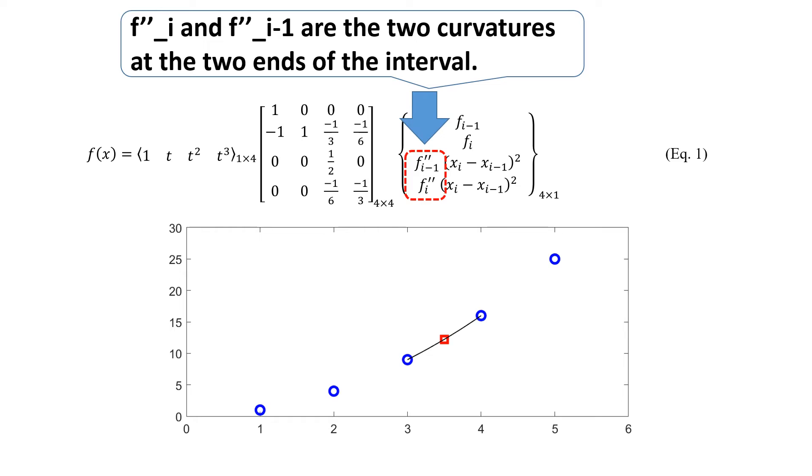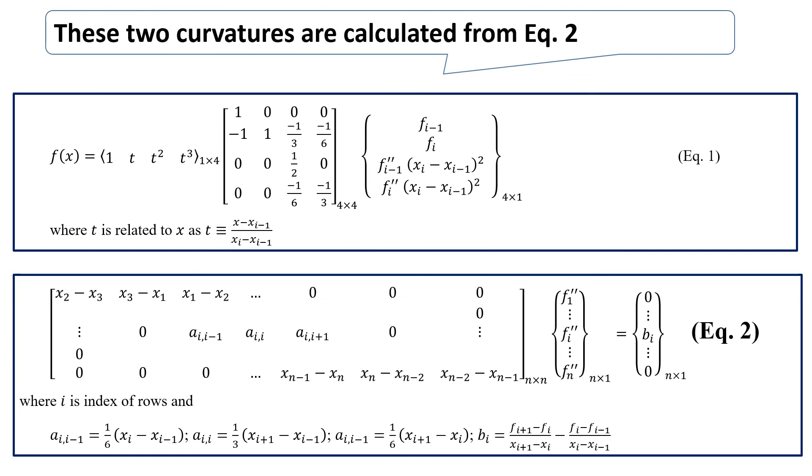f''_i-1 and f''_i are the two curvatures at the two ends of the interval. These two curvatures are calculated from equation 2.